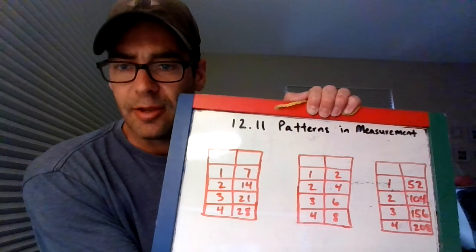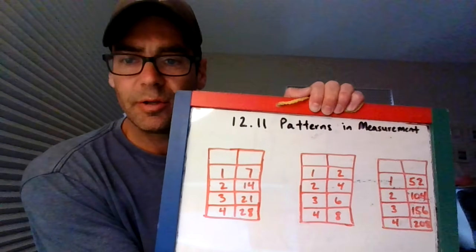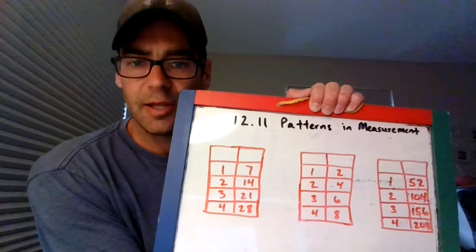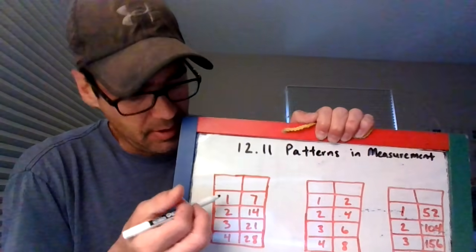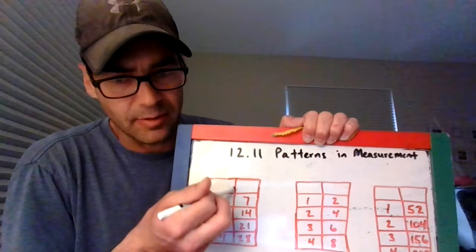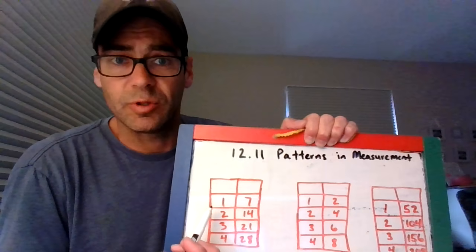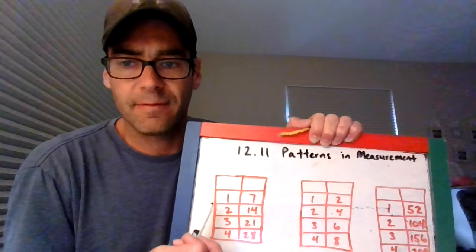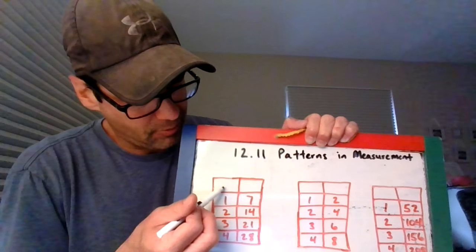What you're going to do today is you're going to be getting these tables. These tables are the boxes with the columns and the rows and numbers in them, which is what the data is. You're already going to have the data provided for you, and your job is going to be to fill out the labels, which are the headings of each column.